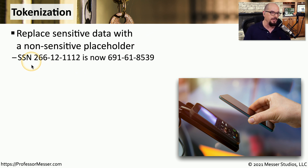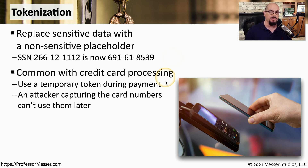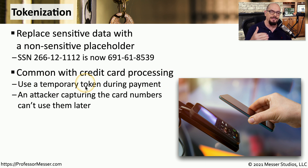For example, a social security number such as 266-12-1112 is stored in the database as 691-618539 — a completely different number with no representation to the original. We also see tokenization used when storing credit card numbers. We need credit card information stored for normal purchases, but we also want to protect against anyone gaining access to that credit card number. So instead of storing the actual credit card number on our device, we store a temporary token on our device and use that during the purchase process.